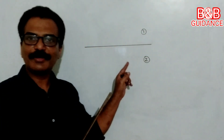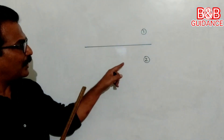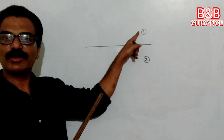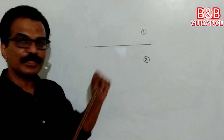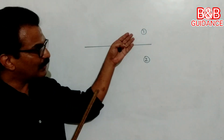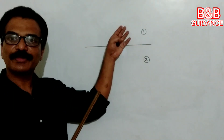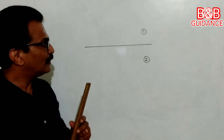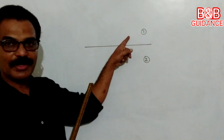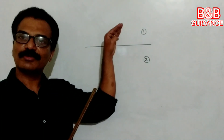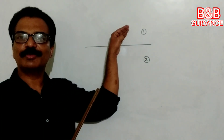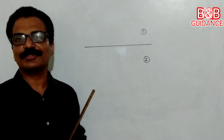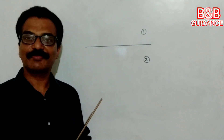Here in my diagram, I have made two media. This is medium 1 and this one is medium 2. The optical density of these two media are different. That means, in this medium, light travels with one particular speed, and in this medium, the same light will travel with a different speed.